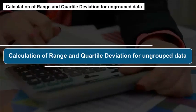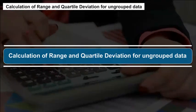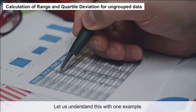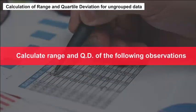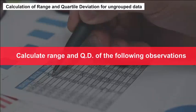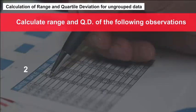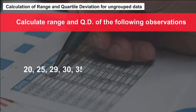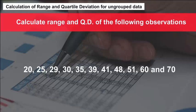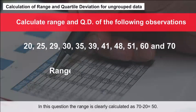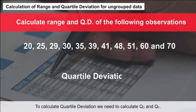Calculating Range and Quartile Deviation for ungrouped data. Let us understand this with one example: Calculate range and QD of the following observations — 20, 25, 29, 30, 35, 39, 41, 48, 51, 60, and 70. The range is clearly calculated as 70 minus 20, which equals 50.